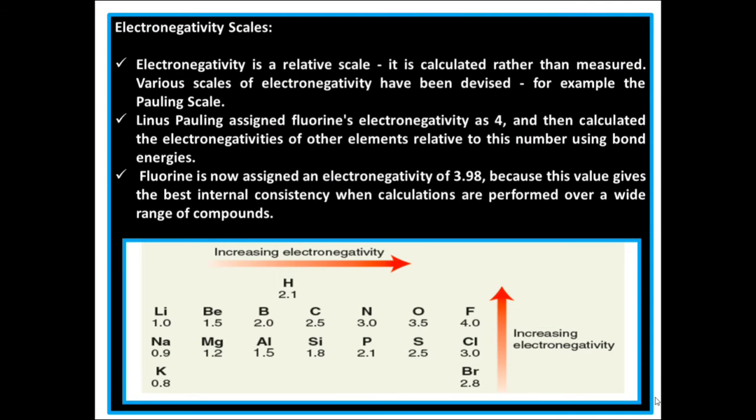Observe the diagram. We observe that electronegativity increases as you move from left to right in a period, and it will also increase at the upper side of the periodic table.